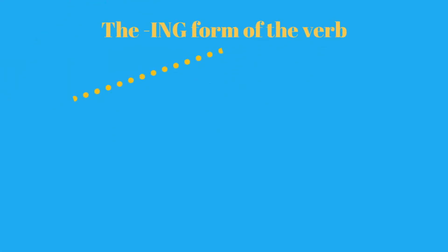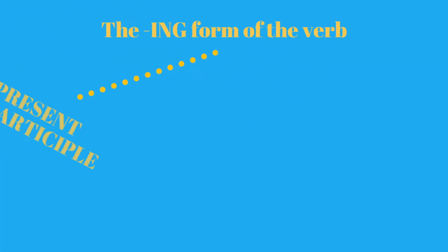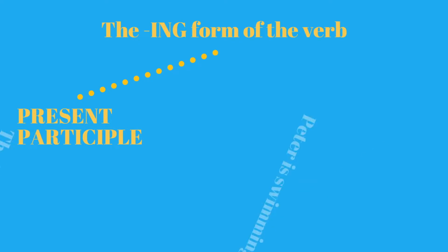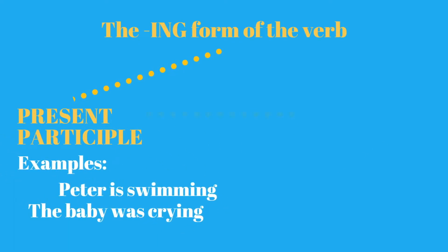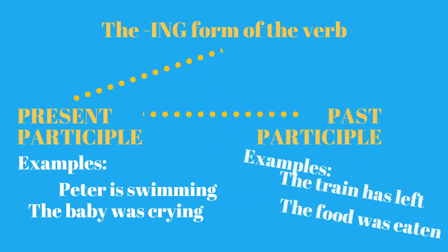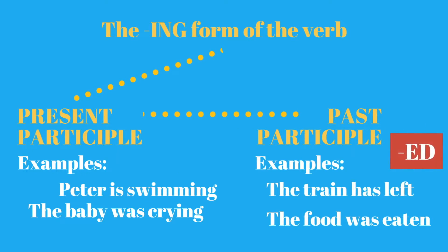The -ing form of the verb in English works in two different ways. One is as a participle, telling us what someone or something is doing, or was doing, will be doing, and so on. This is usually called the present participle, as opposed to the past participle, which ends in -ed in regular verbs, and is sometimes called the fourth form of the verb.